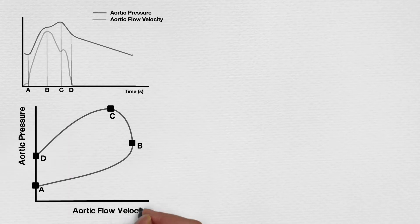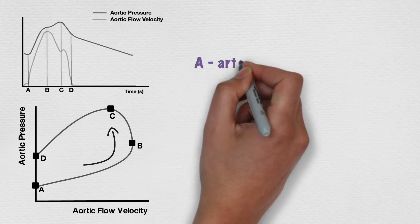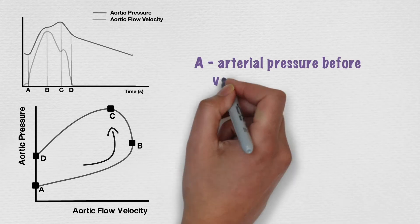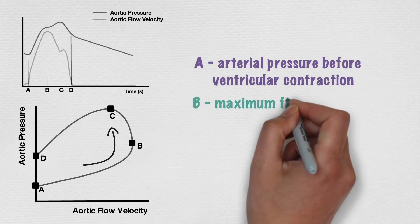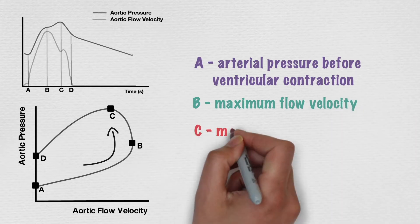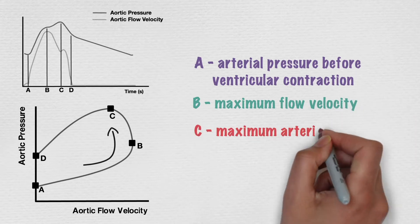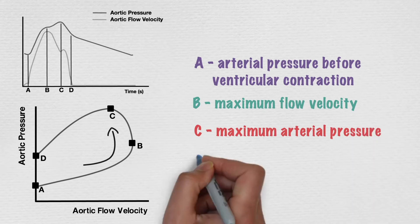Various features can be identified on the loop. Point A is the arterial pressure prior to ventricular contraction. Point B corresponds with maximum flow velocity. Point C is maximum arterial pressure. And point D is the end of ejection.